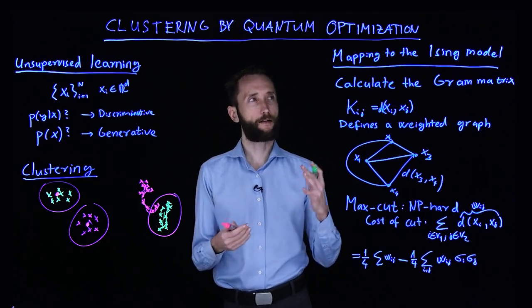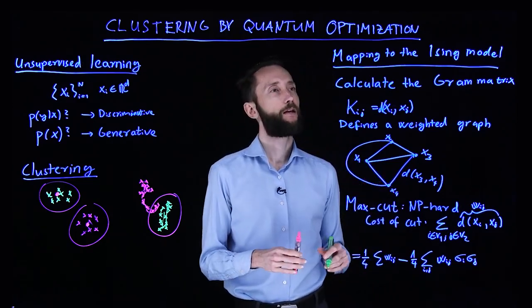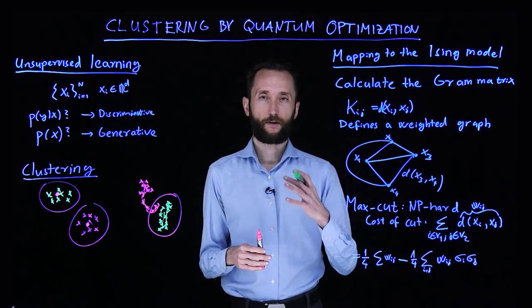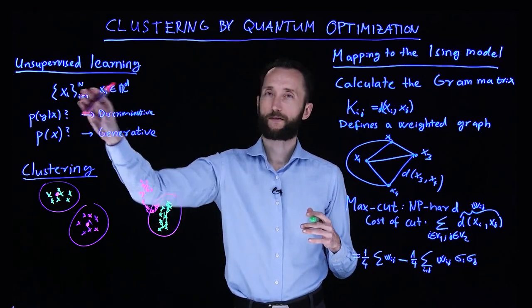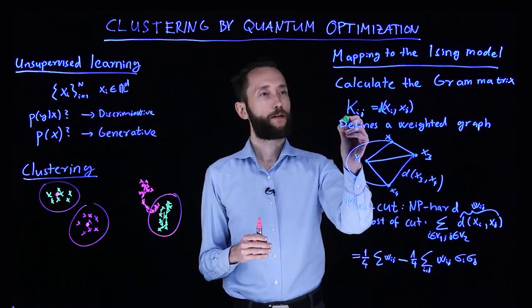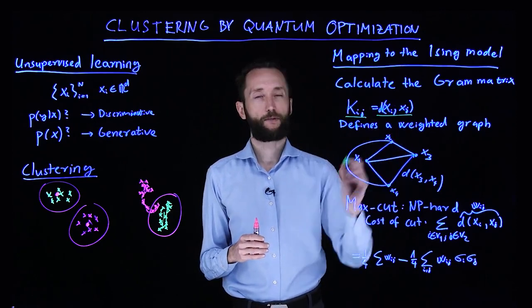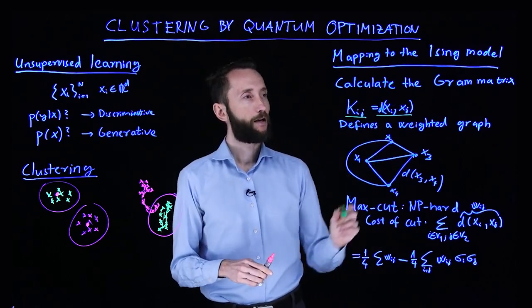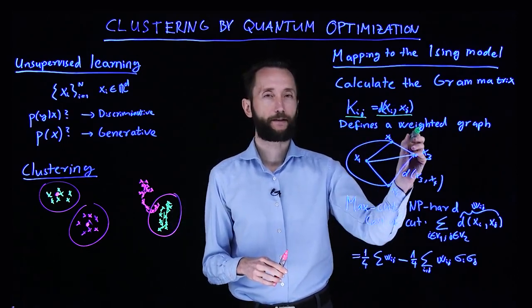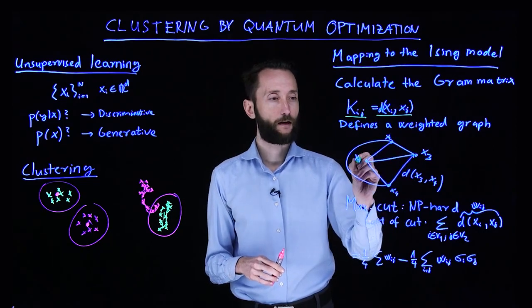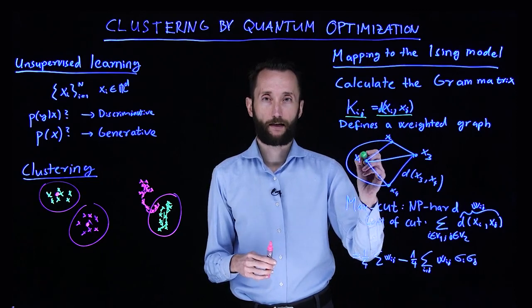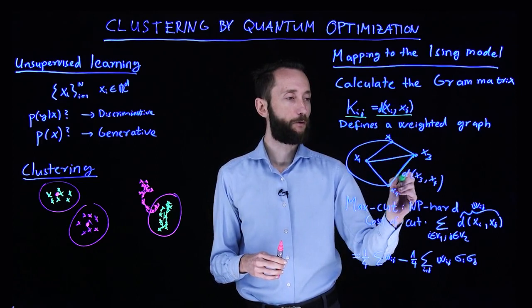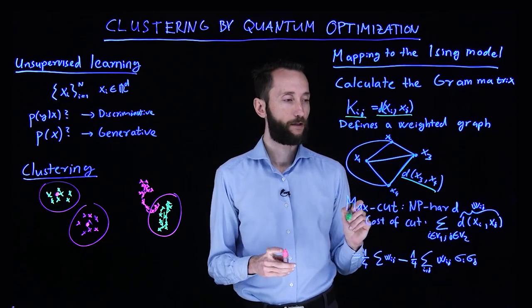Here's one way of doing it by a quantum computer. We can think about calculating the gram matrix, the distance between every single point in the sample that we are given. We fill this gram matrix with the distances between individual points. This is a symmetric matrix because the distance function is symmetric. Now if you have the gram matrix, that actually defines a weighted graph. The points of the graph will be the data instances, so we can label them by the data instances. The edges connecting them will be weighted by the corresponding distance between the points.